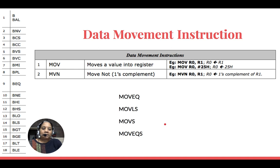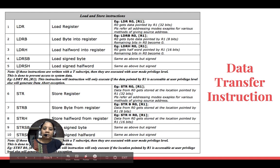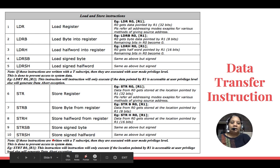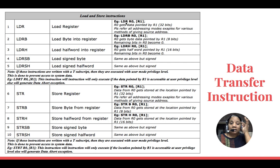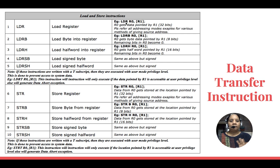Now we move to data transfer instructions — load and store. There are only two types: load instructions and store instructions. Load means you are taking a value from memory and loading it into one of ARM's registers. Store means you are taking a value from an ARM register and storing it into memory. They are opposite operations.